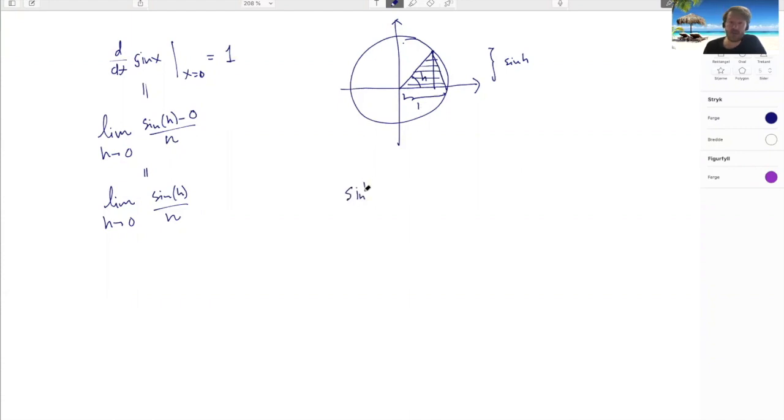What's the area of a triangle with height sine h and base length one? Well that's sine h, so the height times the base length divided by two. And now I can add a little bit here so that I'm considering the area of this piece of cake, the circle sector. And what's this area?